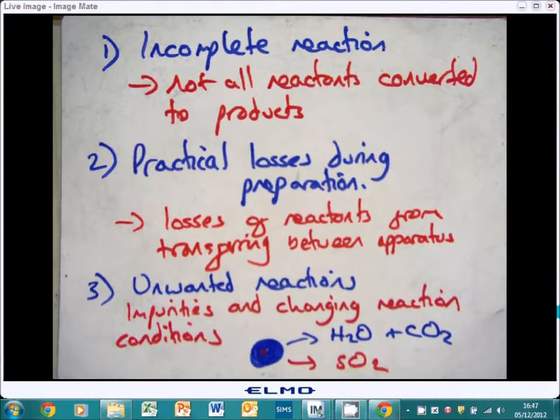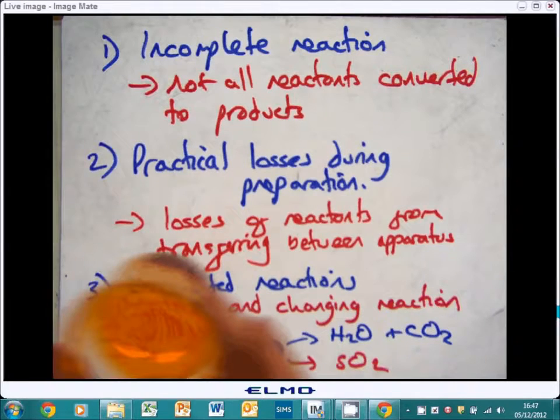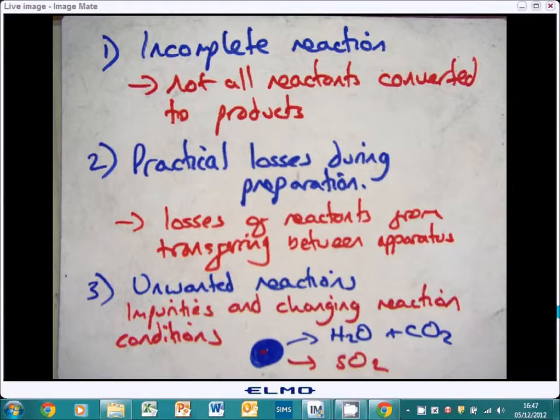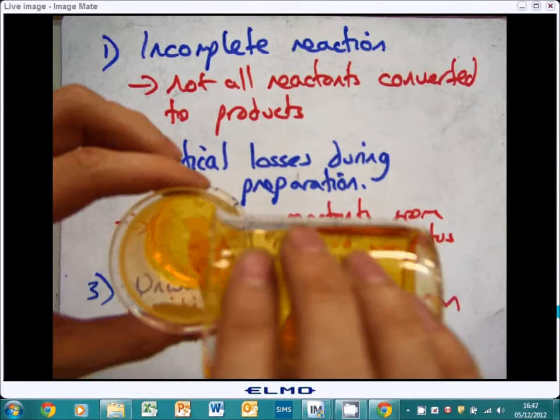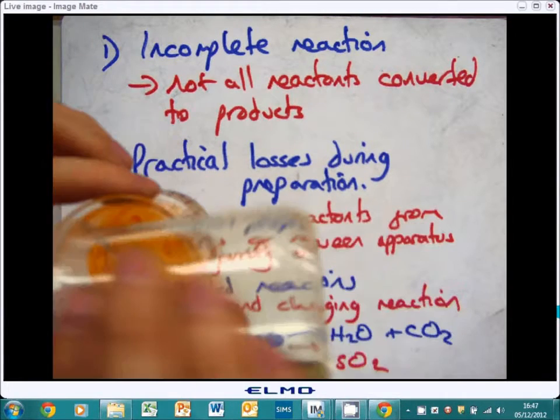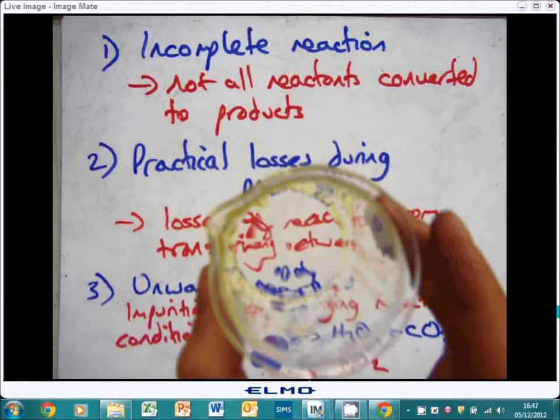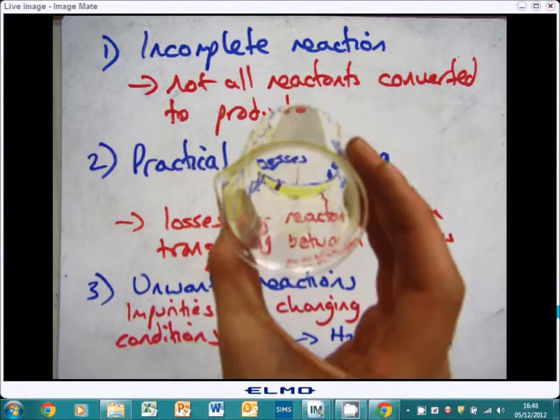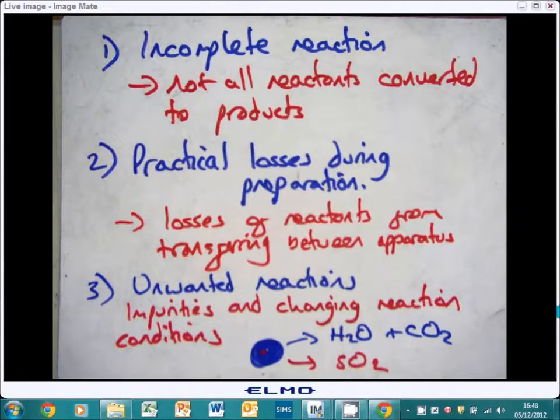Number two, losses during preparation. So for example, if I have a liquid here and I want to transfer it into another beaker, there are still some bits of it left in this original beaker. It's always going to be impossible to collect all of that sample. So losses of reactants from transferring between apparatus, equipment.